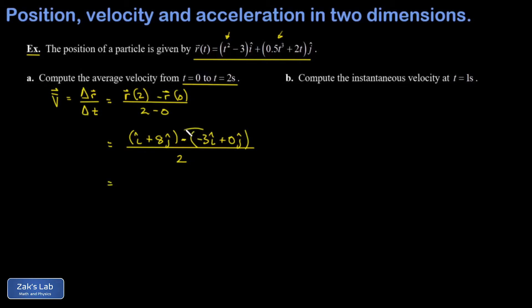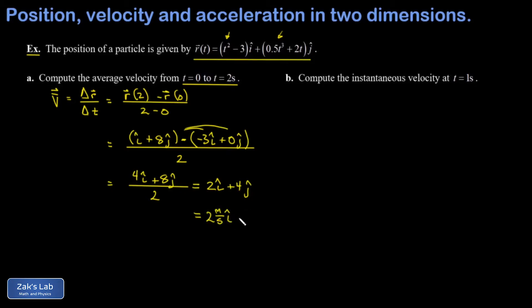Distributing the minus sign and combining like terms gives 4 i-hat plus 8 j-hat divided by 2, and finally 2 i-hat plus 4 j-hat. With units, that's 2 meters per second i-hat plus 4 meters per second j-hat. This means the particle was on average moving 2 meters per second to the right and 4 meters per second upward on the time interval 0 to 2.